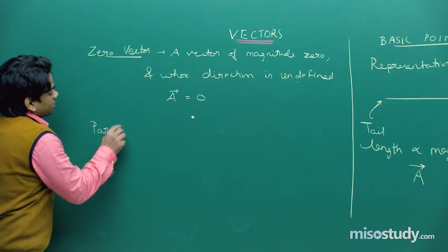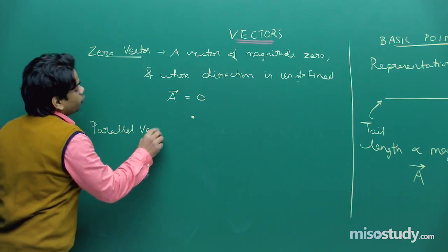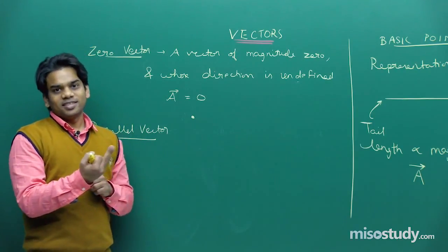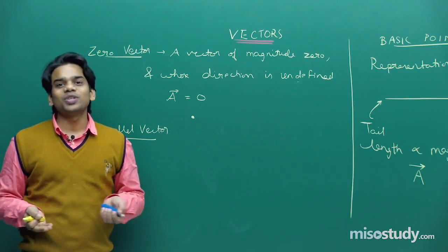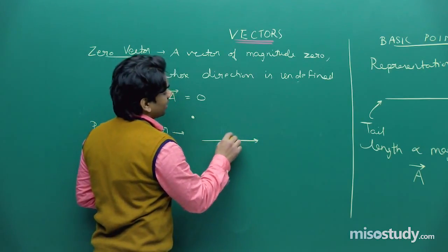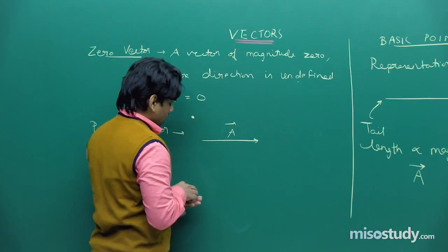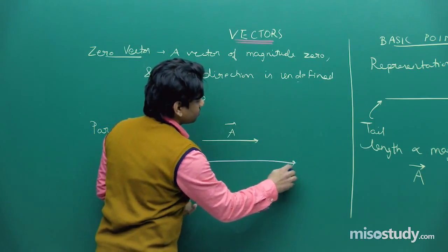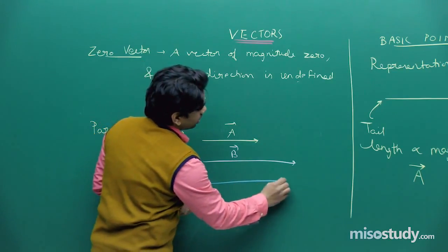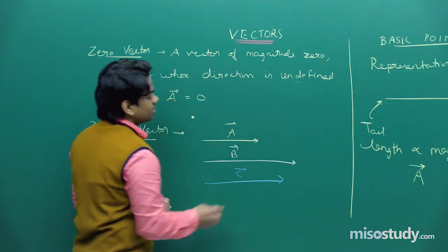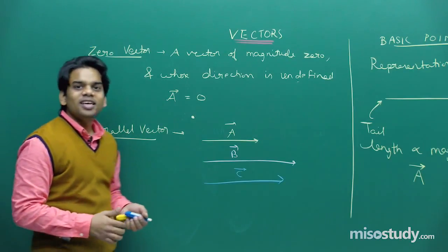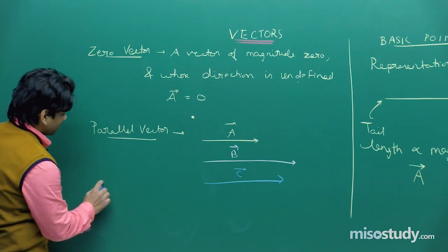Next are parallel vectors. If two or more vectors are directed along the same sense, they are called parallel vectors. For example, vectors A, B, and C can all be parallel vectors if they are all directed along the same sense.